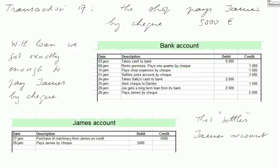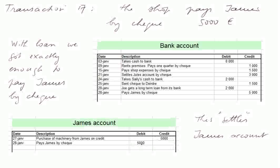Transaction 17: the shop pays James by cheque for 5,000 euros. The bank account is credited 5,000 euros — exactly the amount we had in the bank from the loan. James' account is debited 5,000 euros, which settles James' account. We no longer owe any money to James. Had we paid more than 5,000 euros, James would have become a debtor owing us money.